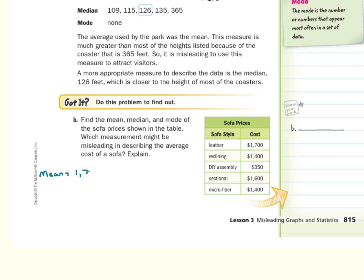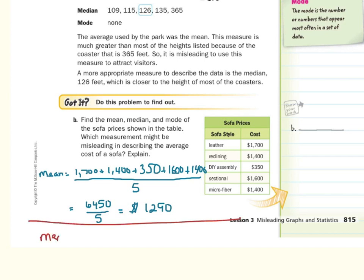If we take 1700, plus 1400, plus 350, plus 1600, plus 1400, and then divide it by how many sofas there are. There are 5. The sum is 6450. Divided by 5 gets me a mean of 1290 dollars.